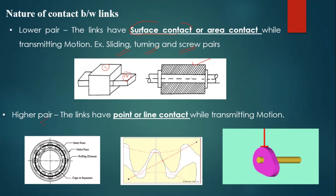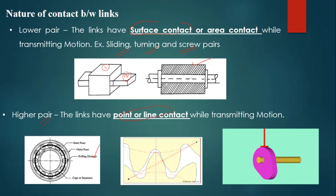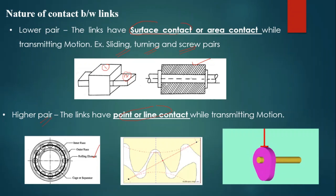For the higher pair, the links have point or line contact while transmitting motion. For example, ball bearings and most gears have line contact, and especially helical gears have point contact. Cam with flat follower is an example of line contact, whereas cam with knife-edge follower is an example of point contact.